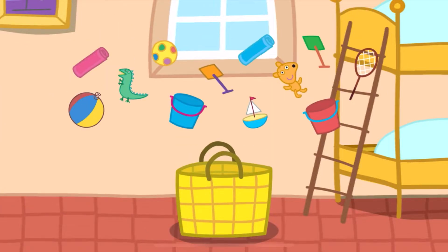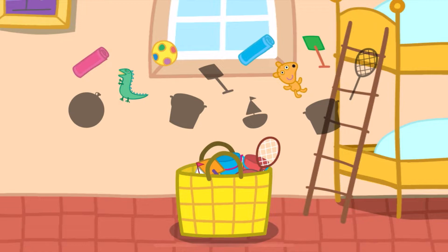Help Peppa and George choose what to take to the beach. Touch a toy to put it in a beach ball. Blue bucket, boat. Red bucket, racket. Orange spade. Add a teddy. Green spade. You can add more items to the basket. Or touch the tick to go to the beach.